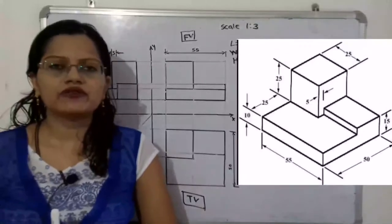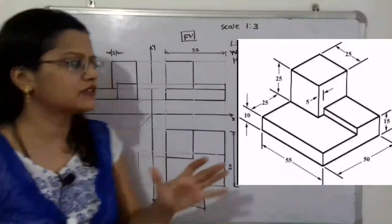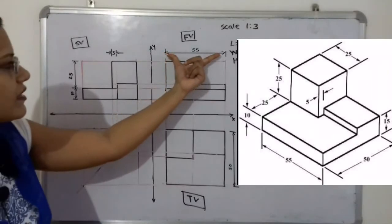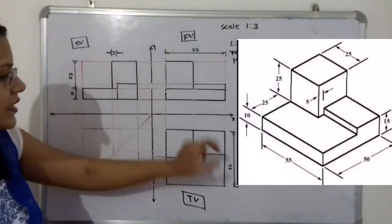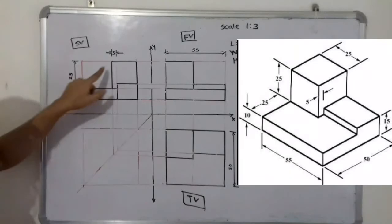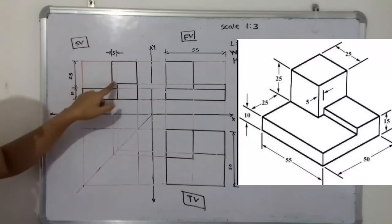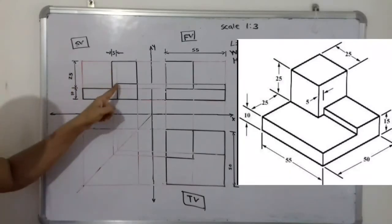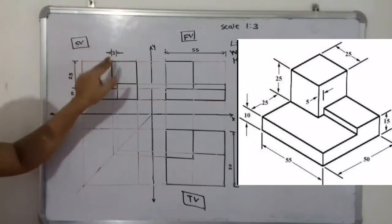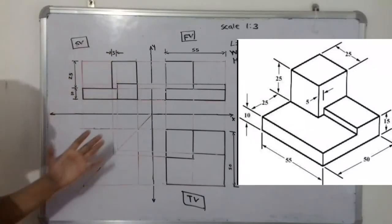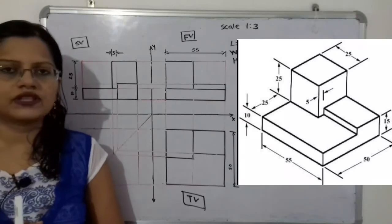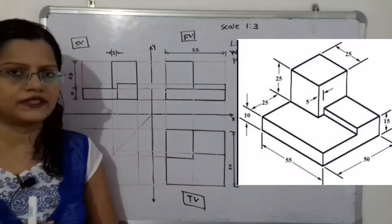Now we give dimensions to the orthographic projection: length, width, height (25mm and 10mm), and also the small gap between the small block and the big block is shown. This completes the orthographic projection for the given three-dimensional object.